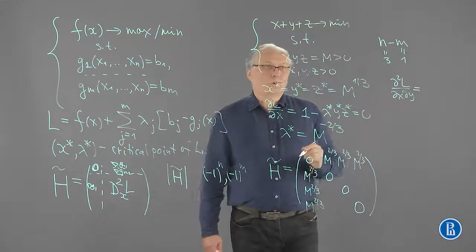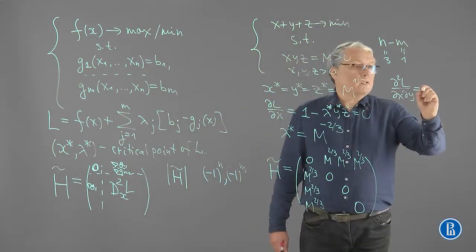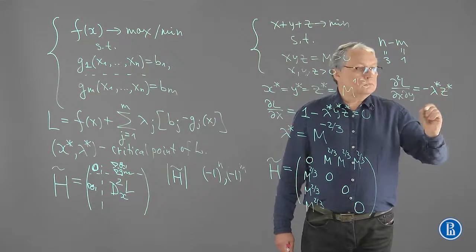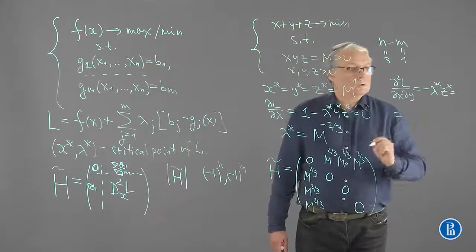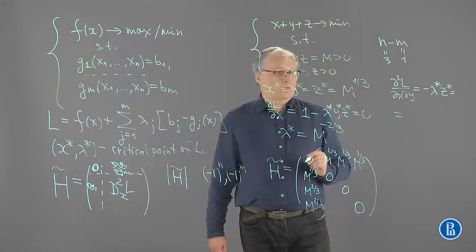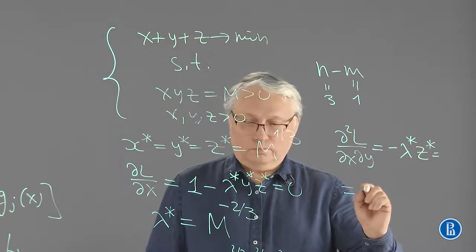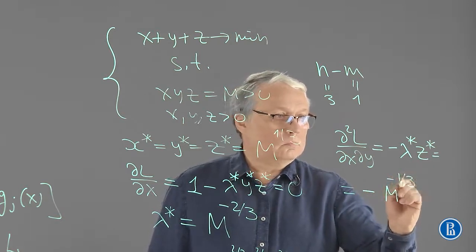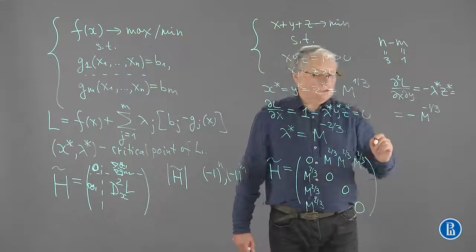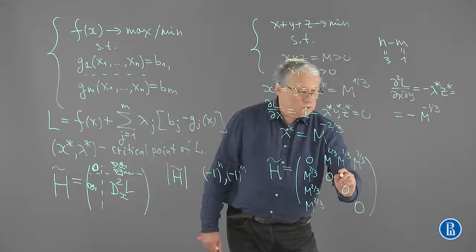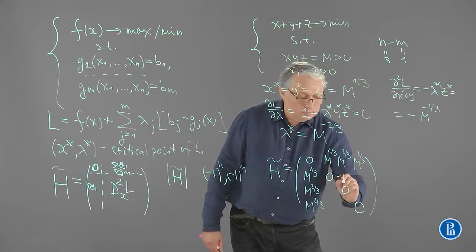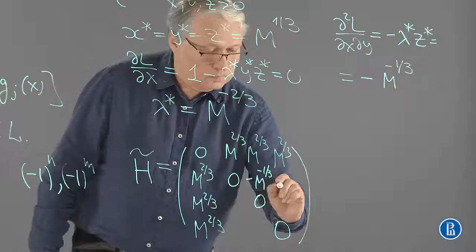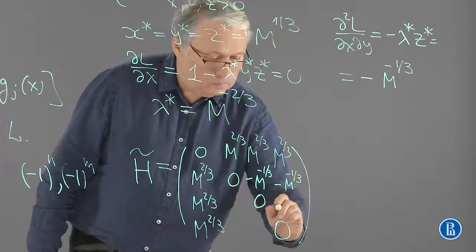What do we get? We get minus lambda star z star, which is... Let us calculate. And we get the same for the rest of the derivatives. That's how we get it.